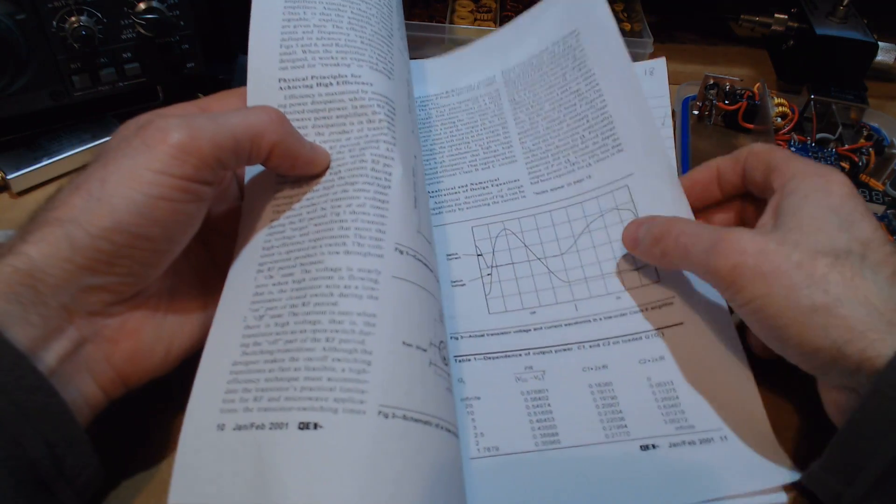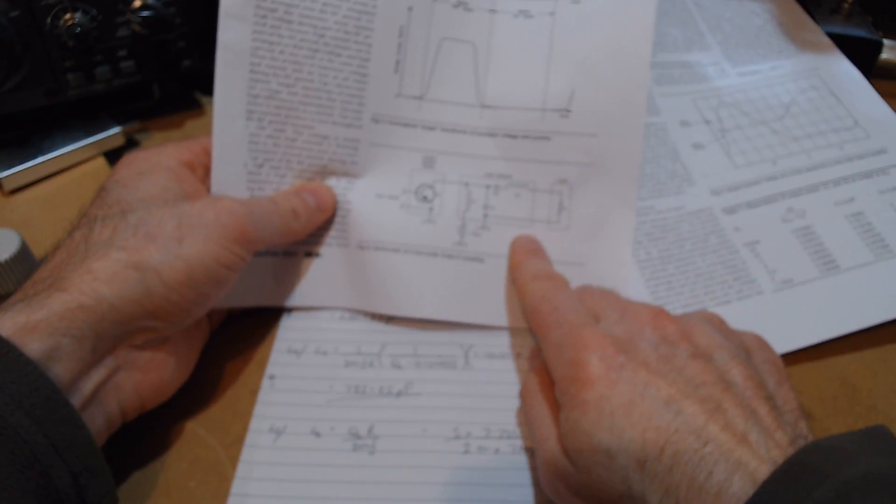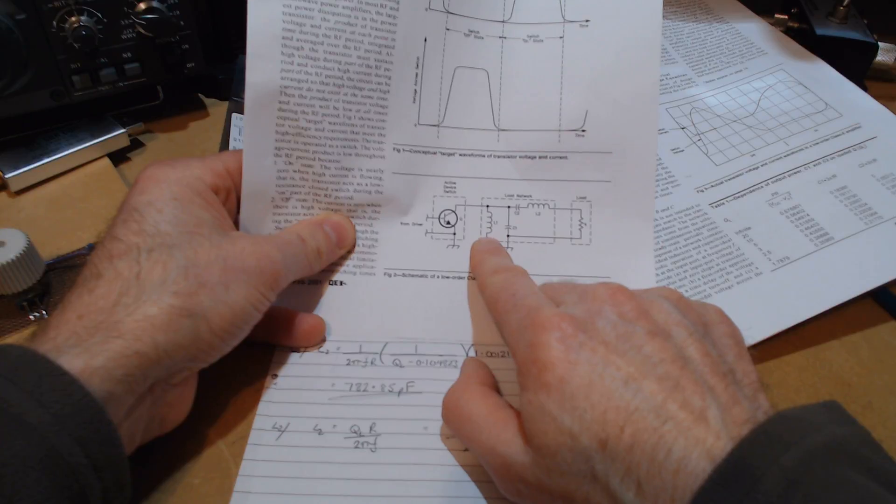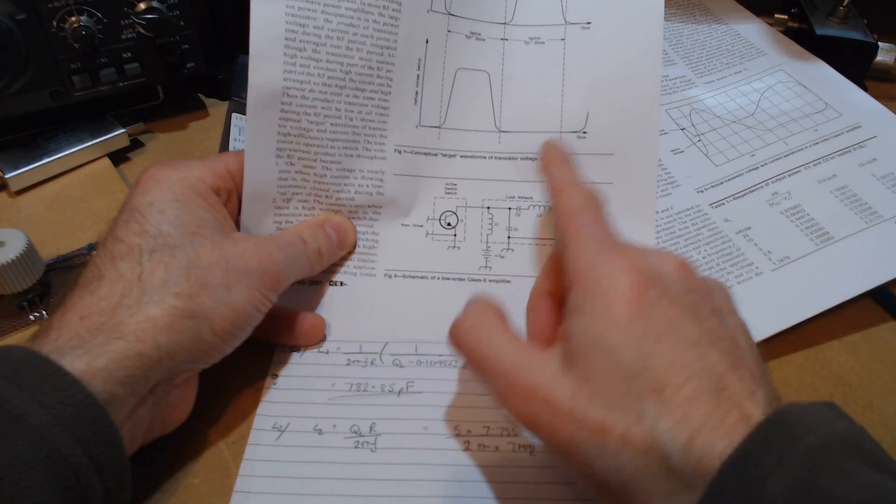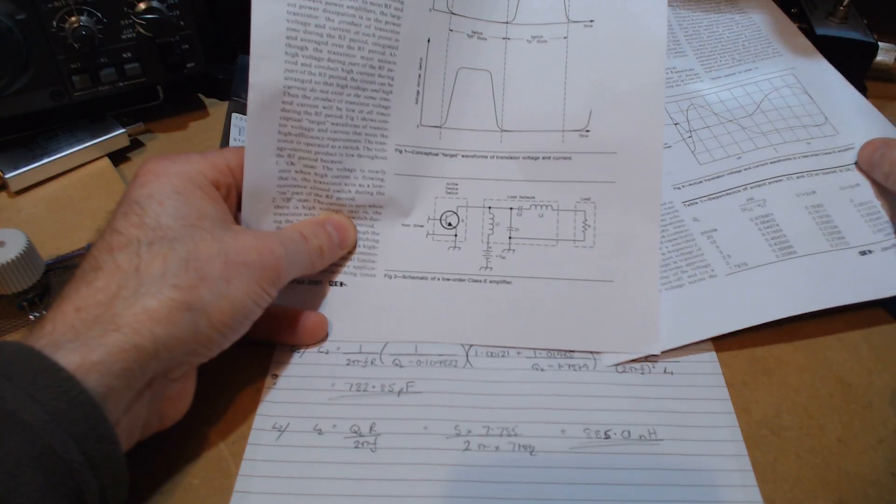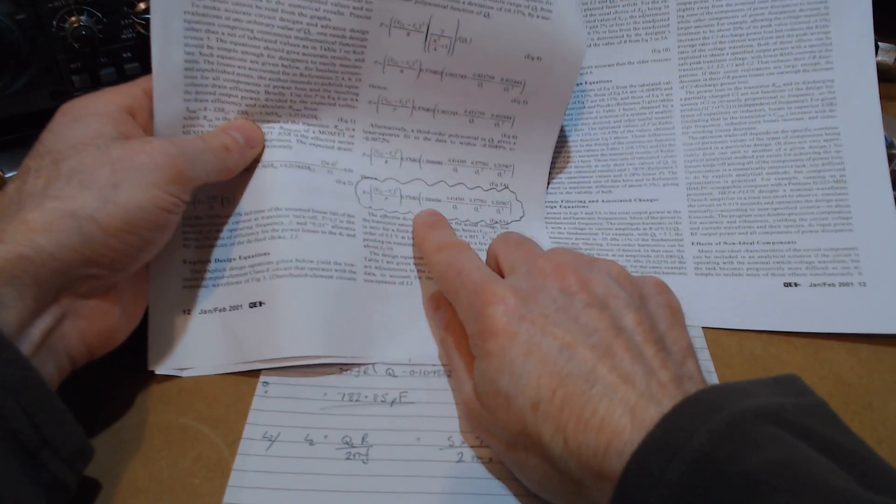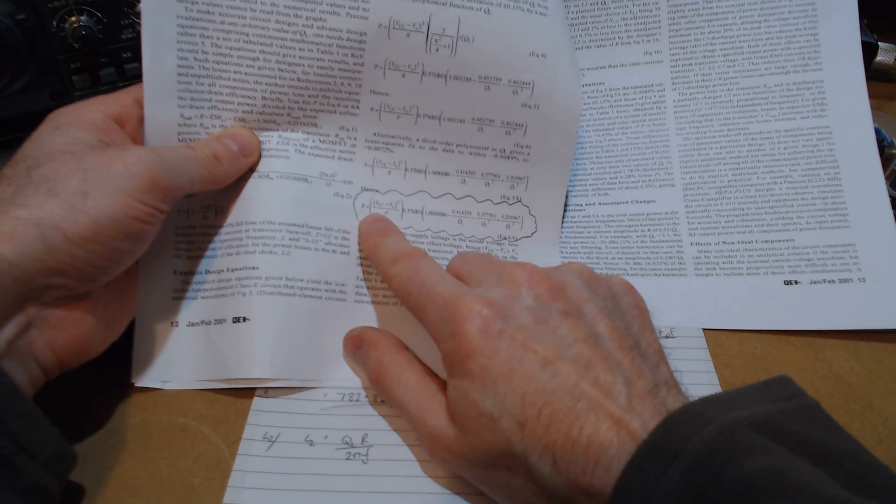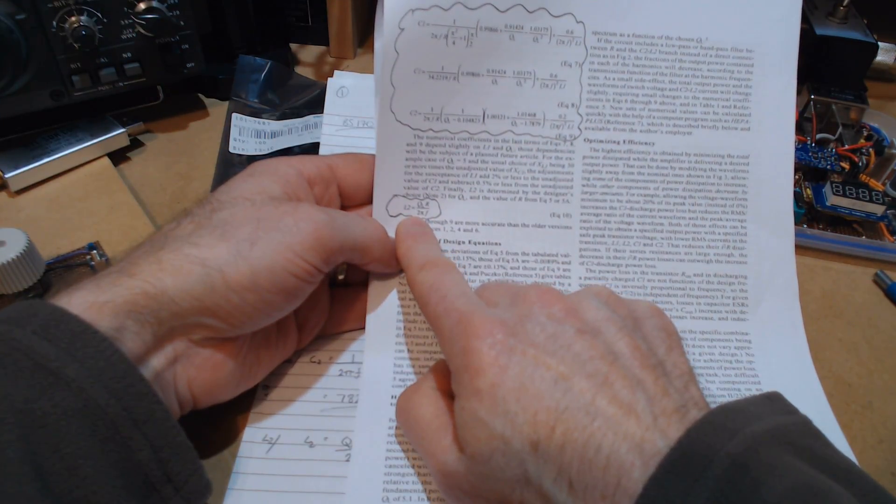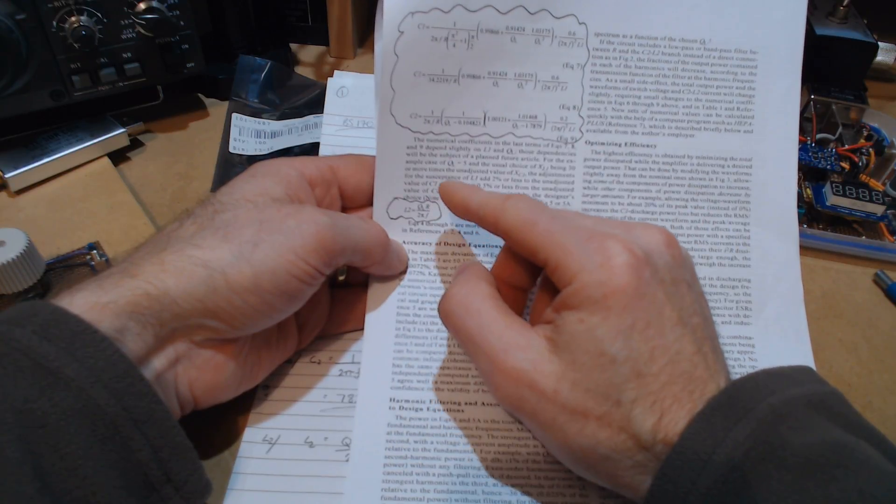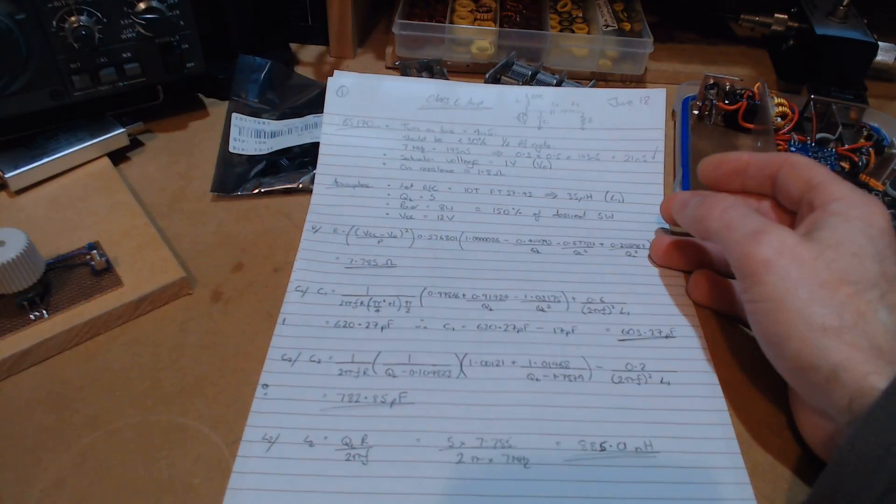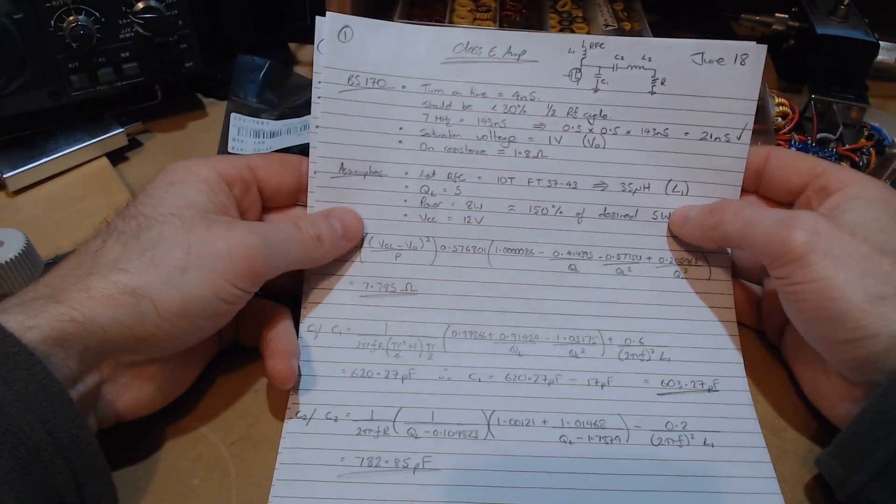In that paper he describes the class E amplifier with a schematic like this. You've got your switching device here, a couple of inductors and a couple of capacitors. This inductor L1 here is essentially an RFC which you set, and then its value gets fed into the formulas for working out the two capacitors, the second inductor, and our load resistor. In that paper there he presents a number of formulas. There are several online tools which have converted these formulas into a nice simple calculator. I elected just to do it by hand but have been using those calculators to great effect.